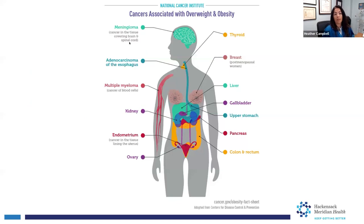Let's talk about the cancers associated with obesity. For women, most importantly, ovarian and breast cancer. To minimize the risks, you really have to get the obesity under control. The reasoning is that obese women have higher estrogen and progesterone levels because estrogen and progesterone are stored in the fatty tissue. As you lose weight, your levels decrease and your risks decrease.